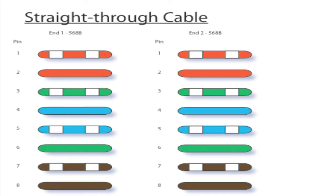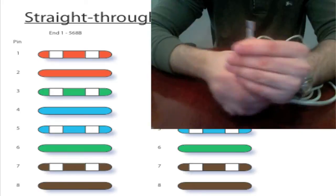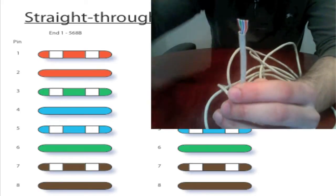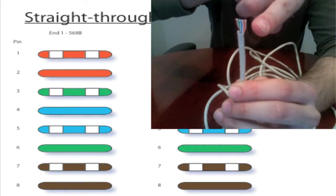Also notice that the wire-to-pin configuration is exactly the same for both ends of the cable. This isn't the case with the crossover cable where the pin-to-wire configuration is different at each end. Now let's take a look at our cable. You notice the wires are lined up exactly the same as in the diagram starting from right to left.